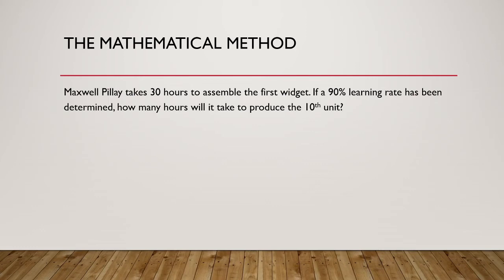Pause this video and give this question a try. We can't use the formula to calculate the incremental time of the 10th unit directly. However, we can use the formula to calculate the average time to produce the first 10 units, and by multiplying that by 10, we get the total time for the first 10 units. If we then calculate the total time for the first 9 units, the difference between the two total times gives us the incremental time for the 10th unit by itself.